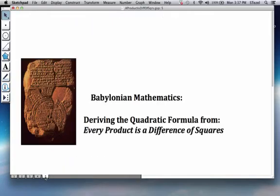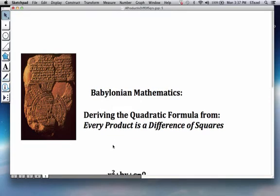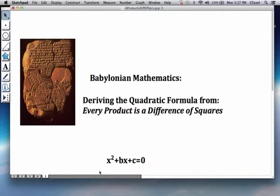And what we're going to do is quickly see an algebraic derivation of the quadratic formula from this knowledge that every product is a difference of squares. In order to do this I'm going to work with a very simple quadratic where the leading coefficient A is 1. You can always do that by dividing both sides of the equation by A to get this form. So I'm just going to focus on this simpler form of the quadratic.